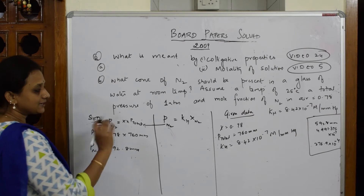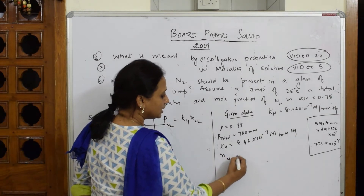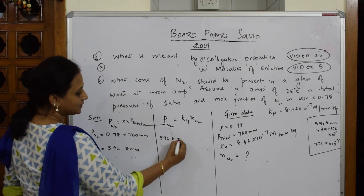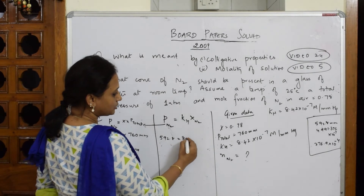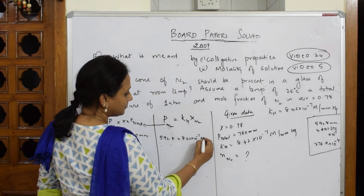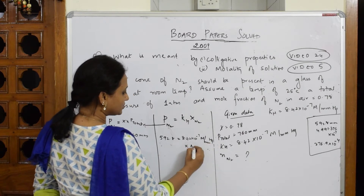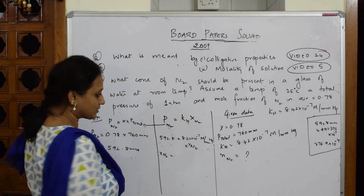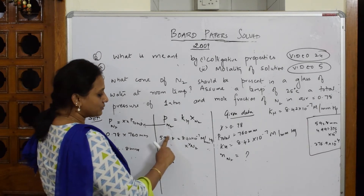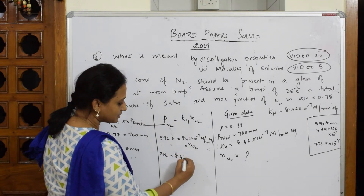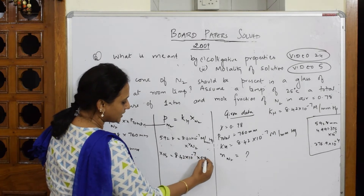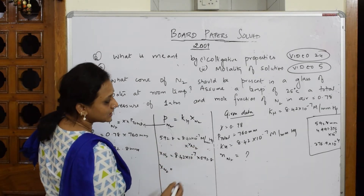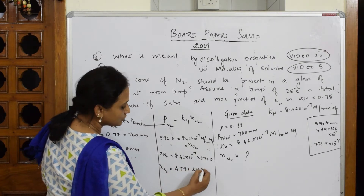First let us calculate: PN₂ = 0.78 × 760 = 592.8 mm. Now, take this partial pressure of nitrogen and substitute it into the Henry's law formula. So 592.8 = 8.42 × 10⁻⁷ M per mm of mercury × X of N₂. This can also be written as 8.42 × 592.8, since the pressure is directly given in mm of mercury.